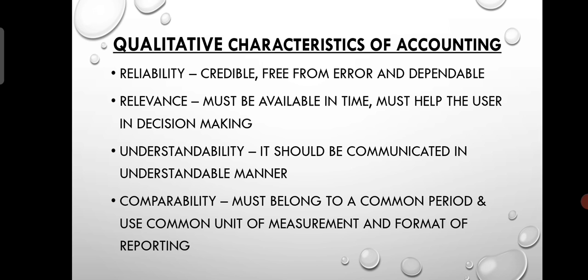For example, the sales figure for January should be made available in February, not delayed until July or August. In order to be relevant, information must be provided at the correct time and in the correct format so that it supports appropriate decision making.